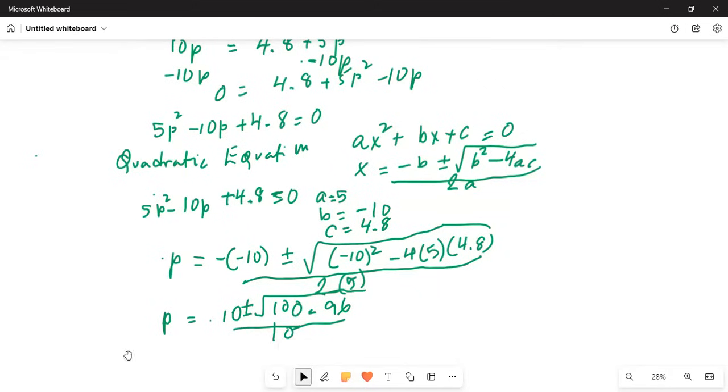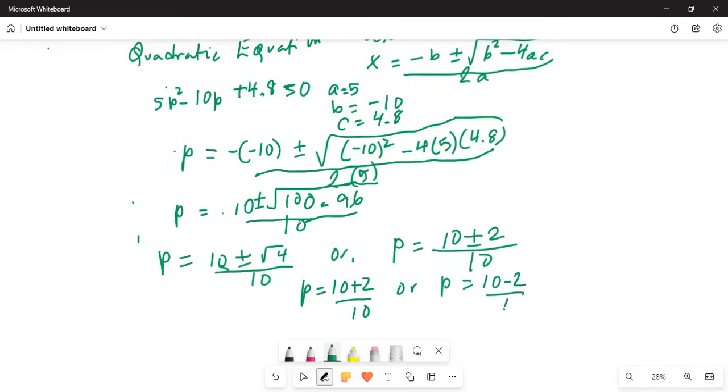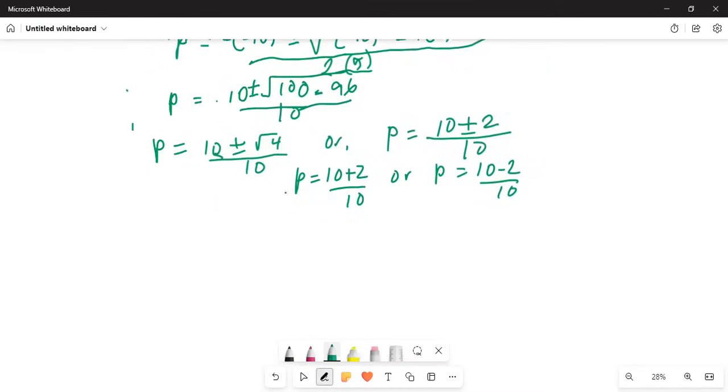Which can be further simplified into p is equal to 10 plus minus square root of 4 divided by 10. Or p is equal to 10 plus or minus 2 divided by 10. So there are two possible values of p. One of them is 10 plus 2 divided by 10, or p is equal to 10 minus 2 divided by 10. That means p is equal to 12 over 10, which is 1.2, or p is equal to 8 over 10, which is 0.8.